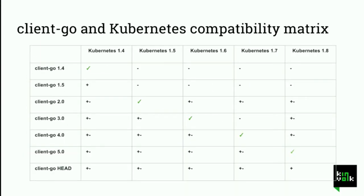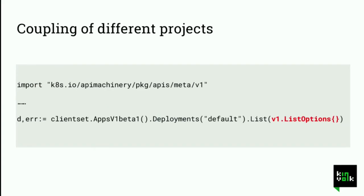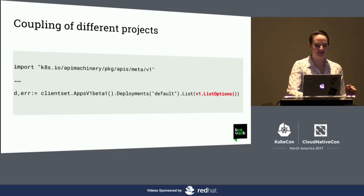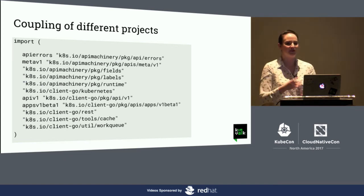There's also this compatibility matrix showing how Client Go is compatible with Kubernetes versions. The green lines show it's mainly compatible with a given version, and everything else is either a breaking change or not well compatible. You basically have to support the latest version of Kubernetes or just the earlier version, unless you want to do some magic. Another friction point: if you want to list deployments, the simplest thing, you actually have to import API machinery as well, which is not part of Client Go itself. That tends to result in a quite messy import section, as seen in our Habitat operator.